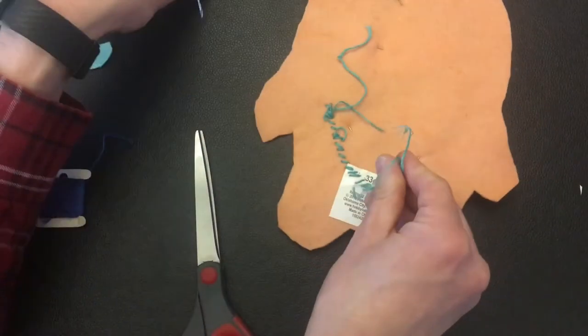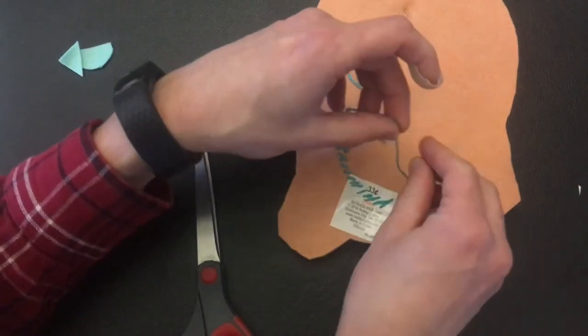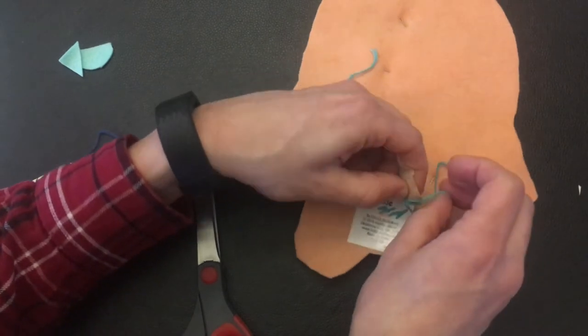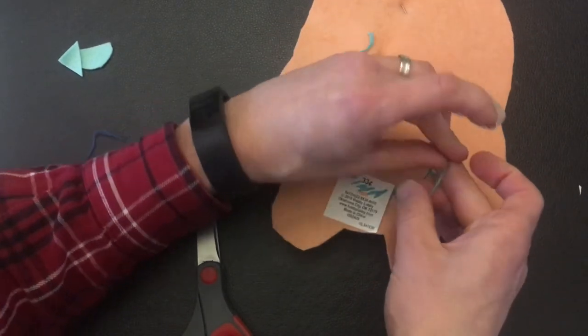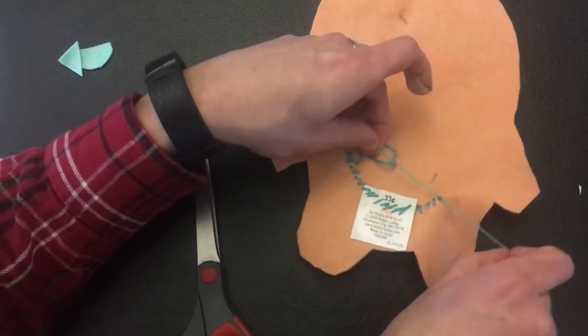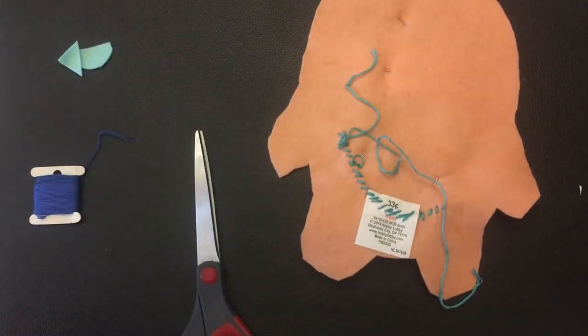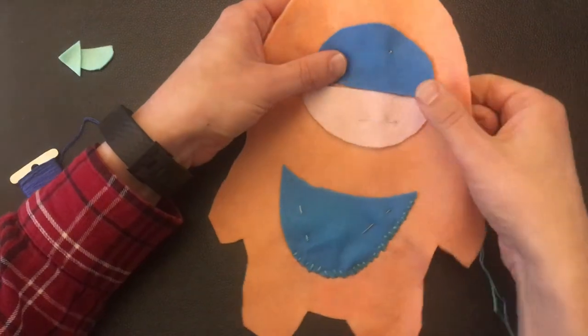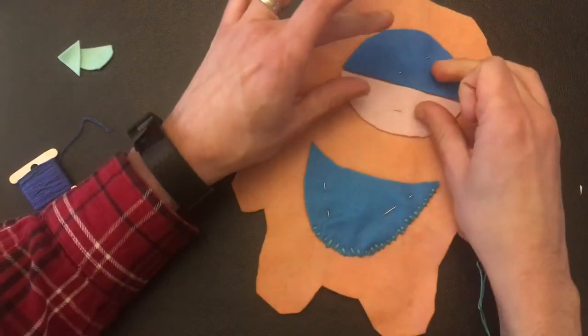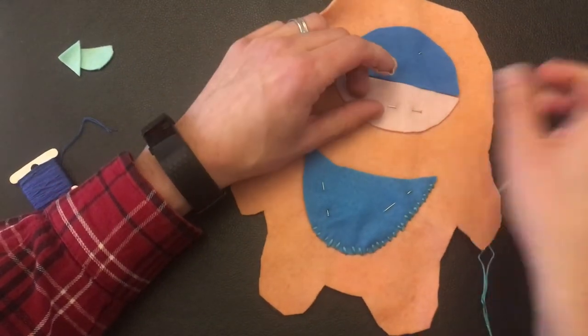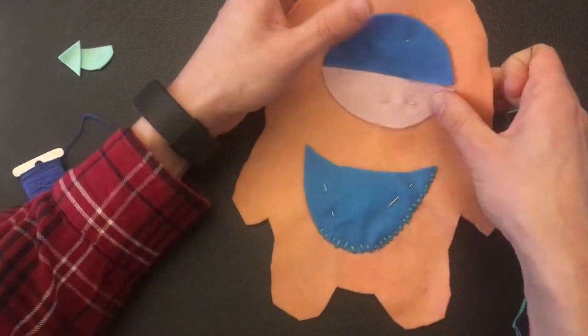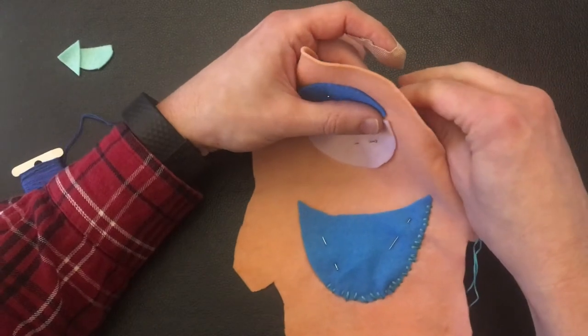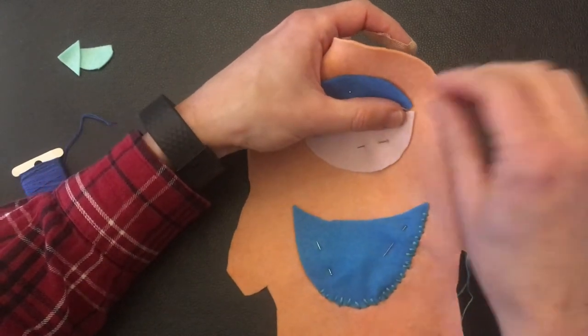Now I want to show you how to use the running stitch to create things on here. So just like we did with our whip stitch, you want to start from the underside so that that knot is hidden.